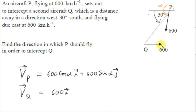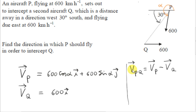Since Q is flying east, vector VQ has no J component, so it's just 600i — the magnitude 600 times unit vector I. Now, what we need to do is find alpha such that the two planes collide. We will consider the relative velocity vector VPQ, the velocity of P as seen from Q.